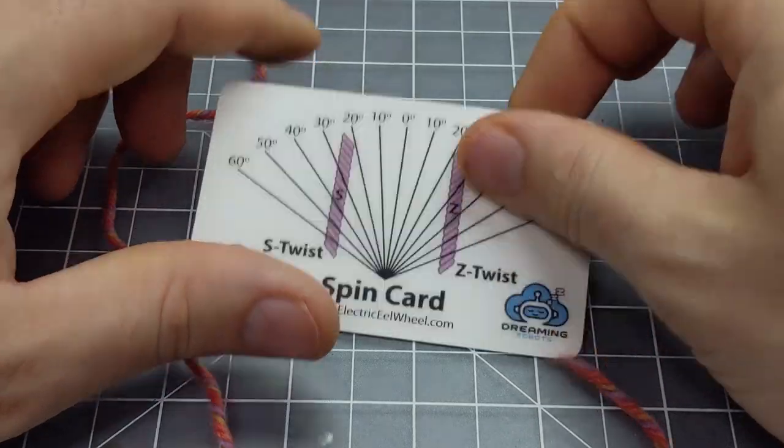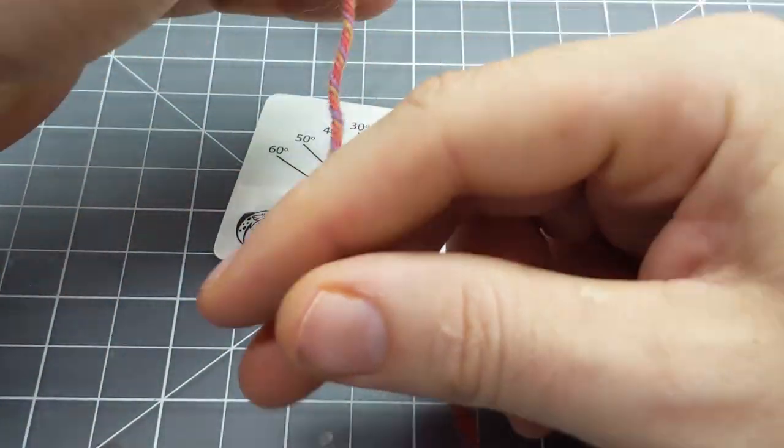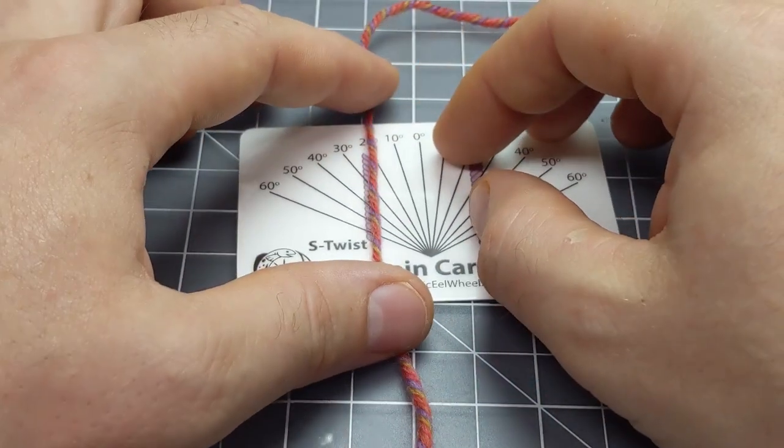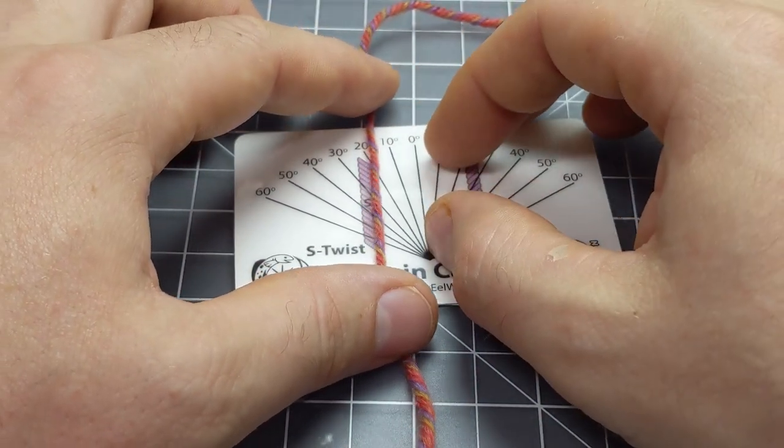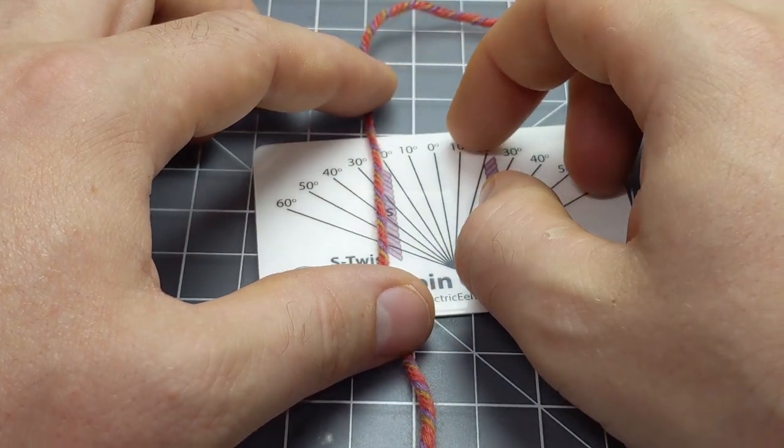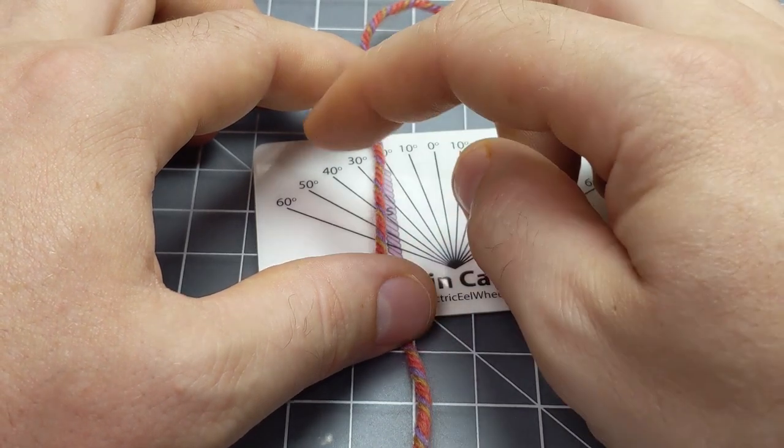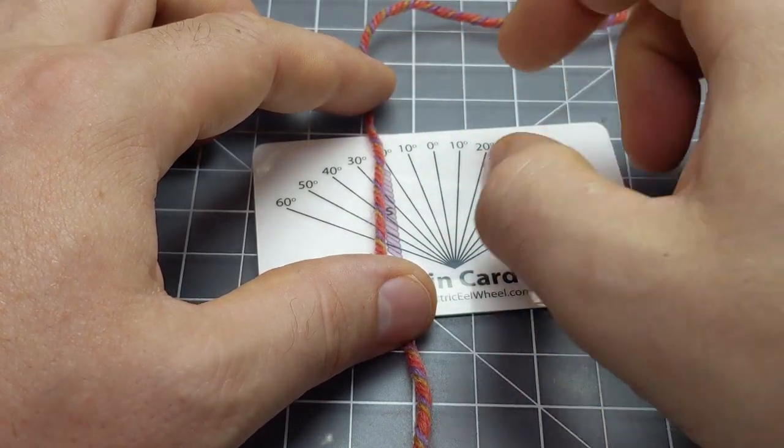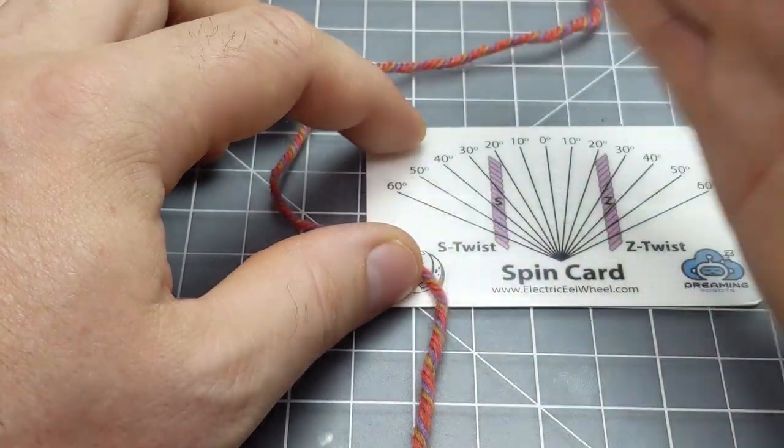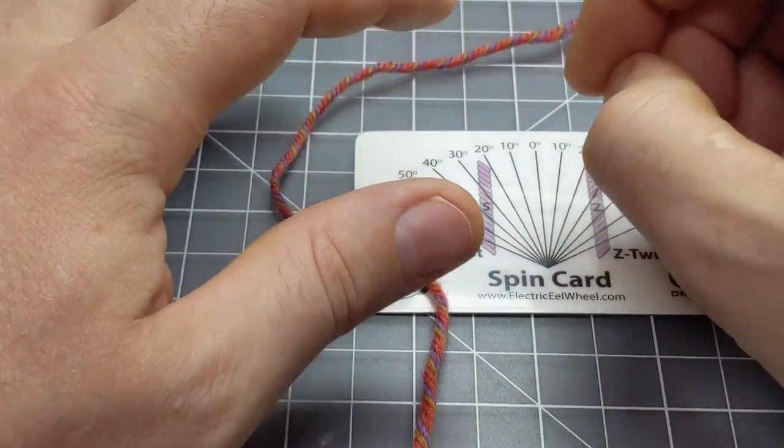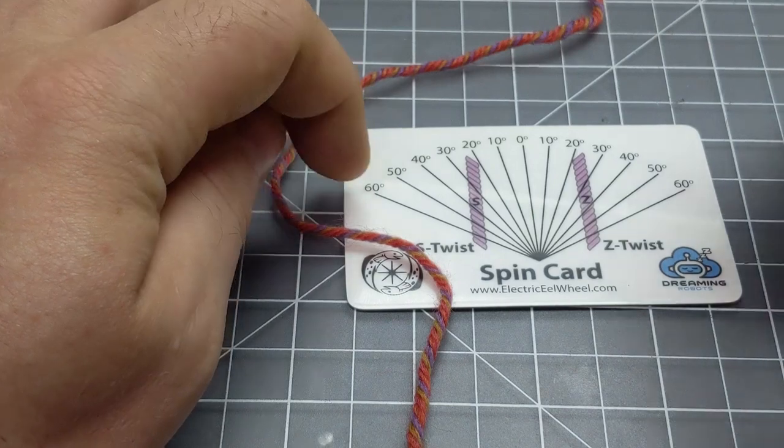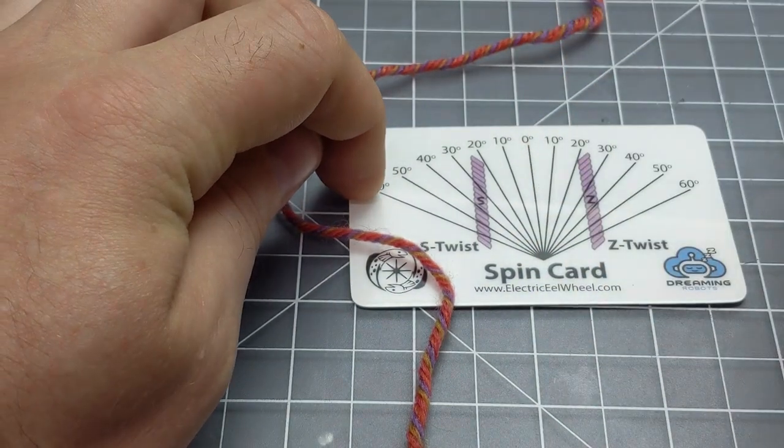And then these angles here help you determine the amount of twist your yarn actually has. So again, you want to pull it just enough to get it straight. And then you line it up with whatever one of these lines makes sense. So this looks like it's maybe 40 degree yarn. And there's not a number of degrees in your yarn that actually is correct. You can have loosely spun yarn that's 10 or 20 degrees and that's fine. And you can have tightly spun yarn that's 60 degrees and that's fine.